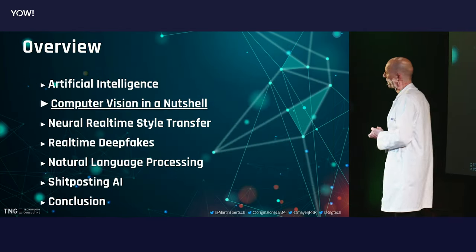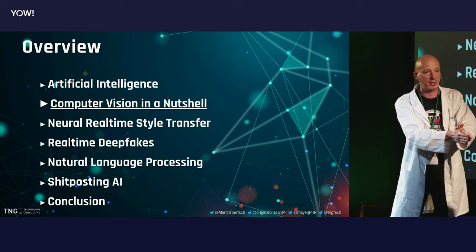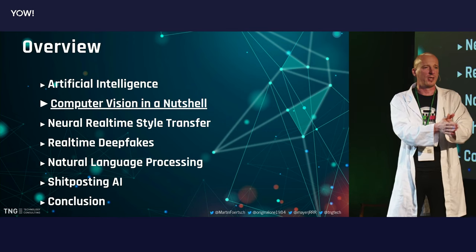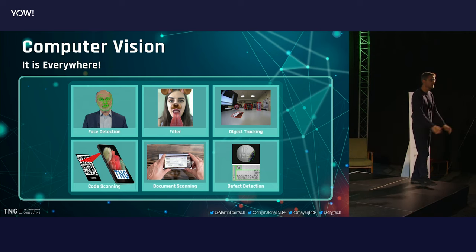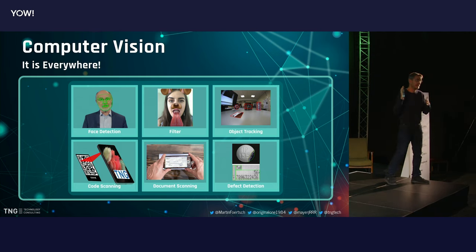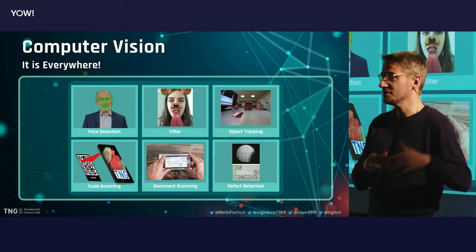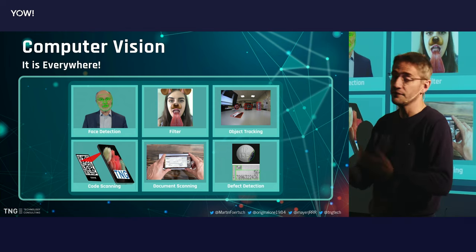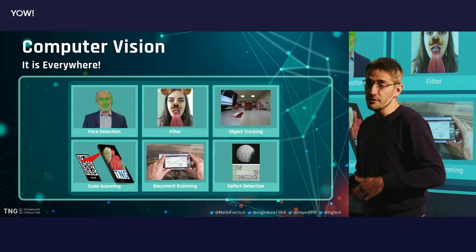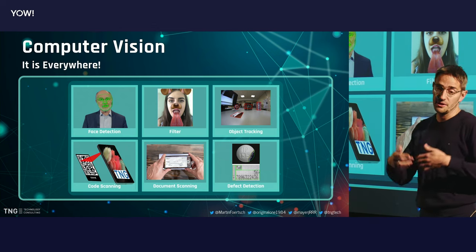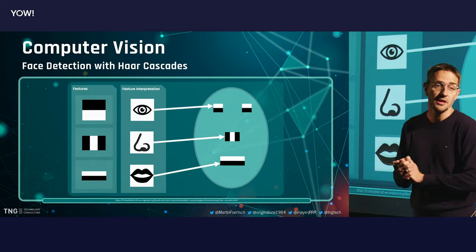We have a lot of live showcases for you today, and we want to start with computer vision in a nutshell — because we want you to understand how a deep neural network processes data. So what is computer vision? Computer vision is in AI everyday life. You do it when you put on a funny dog face filter, or scan your face for face detection, or scan QR codes. Computer vision can be done in multiple ways: traditional algorithmic ways, and new ways using deep neural networks.